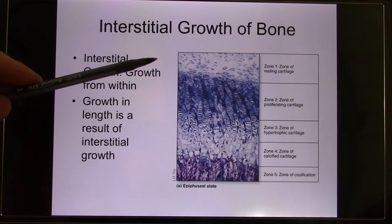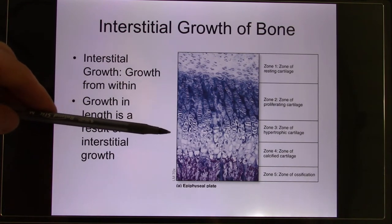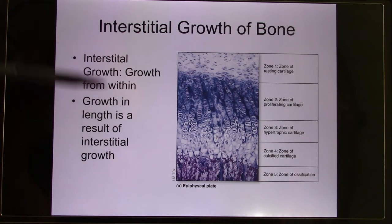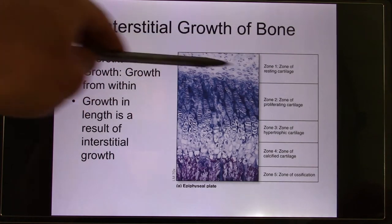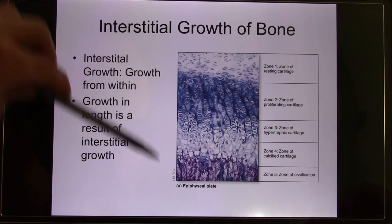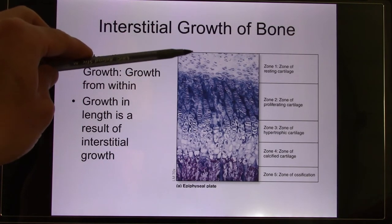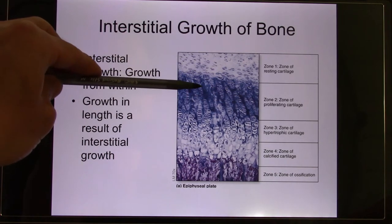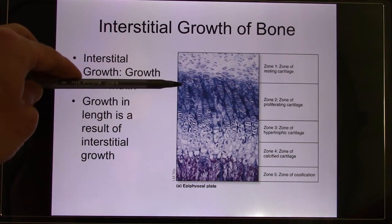In skin we have a base with five layers, starting from the stratum germinativum, and older cells are pushed up. Very similarly in bone, they start from cartilage but push toward the center. There are five zones. The first is the zone of resting cartilage — they do nothing. Next is the zone of proliferating cartilage — these are very active, doing a lot of mitosis, producing new cartilage cells and pushing them down.